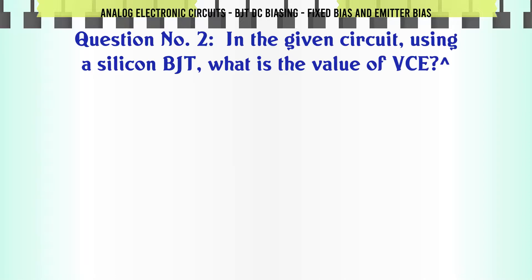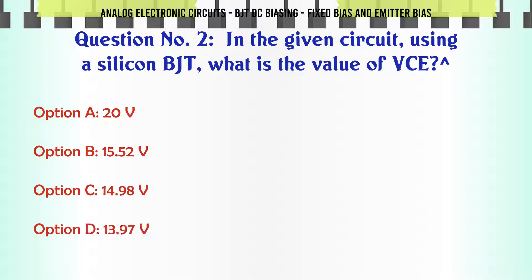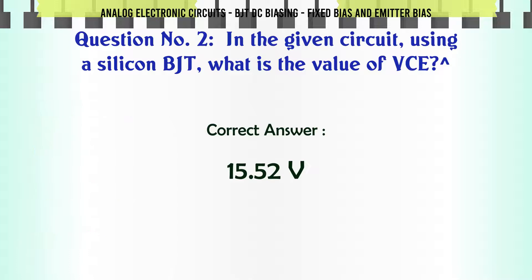In the given circuit using a silicon BJT, what is the value of VCE? A: 20 V. B: 15.52 V. C: 14.98 V. D: 13.97 V. The correct answer is 15.52 V.